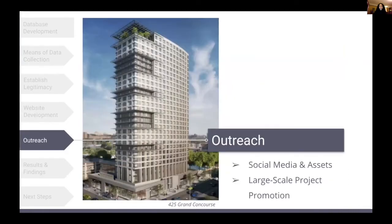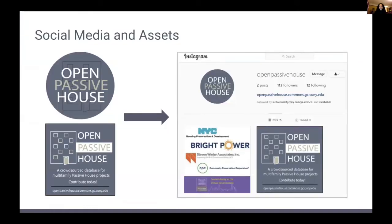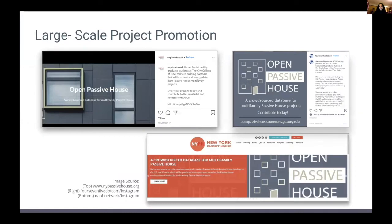After the website went live, we were ready to begin disseminating the survey and conducting outreach. To support our outreach efforts, we designed assets for sharing on social media and created an Instagram account for the project. With a live website and social media assets ready, we began reaching out to networks and organizations within the passive house community, asking them to promote the project in their newsletters, websites, and social media accounts.